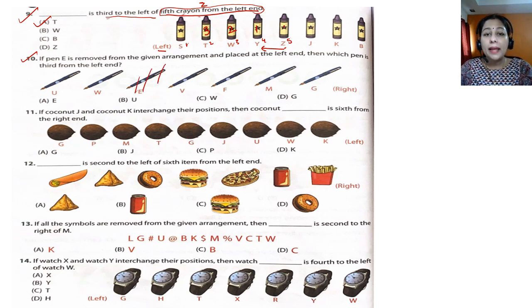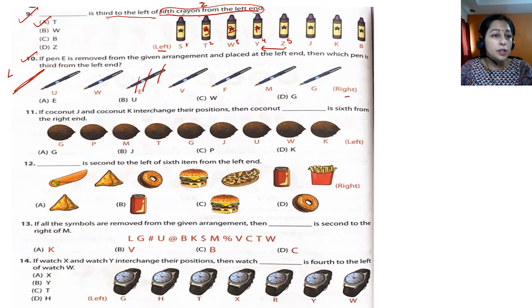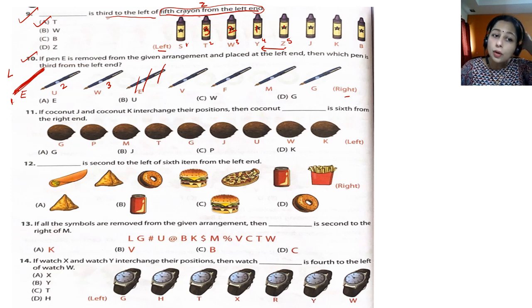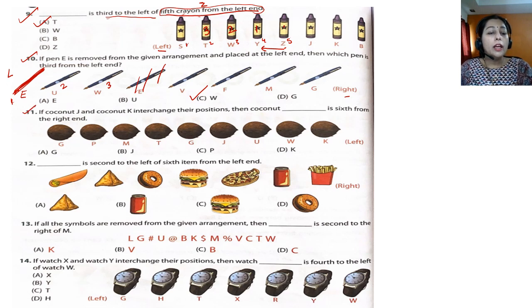Question 10: if pen E is removed from the given arrangement and placed at the left end, which pen is third from the left end? They've shown this is the right, so this is the left. Place pen E at the left end. Now third from the left: first, second, third — the answer is W, which is option C.